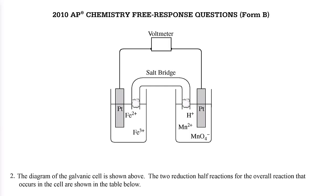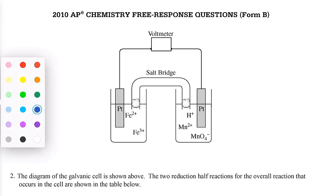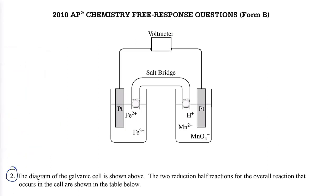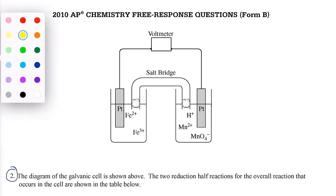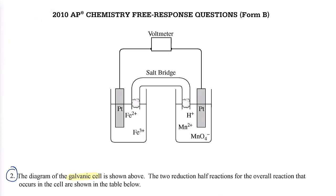What we've got here is a galvanic cell. If you look at question two, we have a galvanic cell right here, and this galvanic cell has an anode and a cathode. The first question asks which one is the cathode.